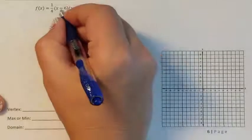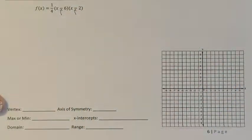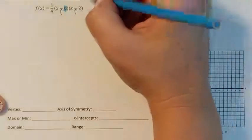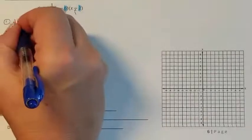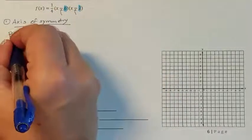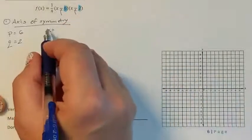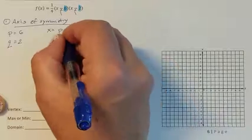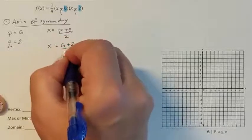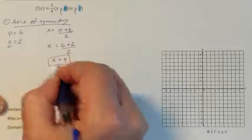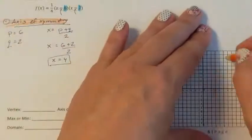Our second practice problem. I see that this is already in intercept form because I already have subtraction in both sides, which means that this 6 is my p and that means that this 2 is my q. The very first thing you have to find is the axis of symmetry. The equation for axis of symmetry in intercept form is p plus q divided by 2. So I have 6 plus 2 all divided by 2. So my axis of symmetry is at 4. Drawing my axis of symmetry line at 4.